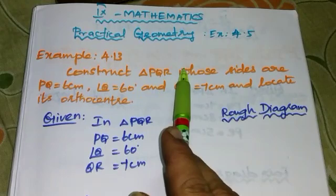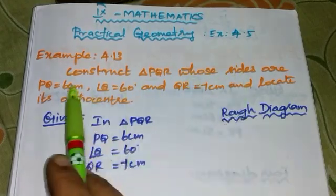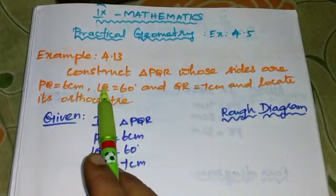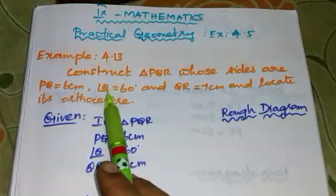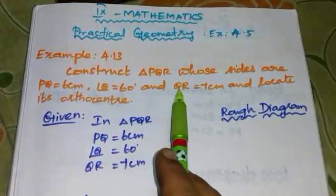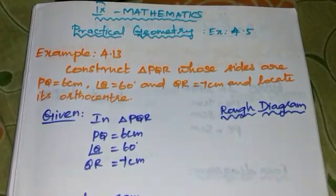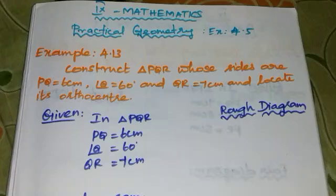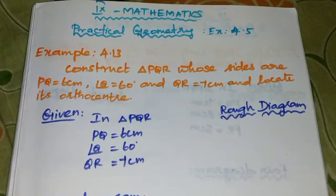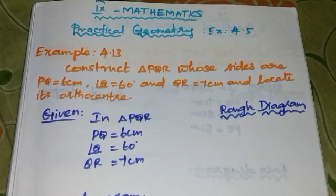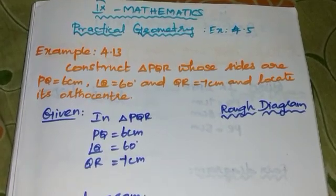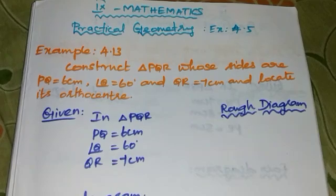Construct triangle PQR whose sides are PQ equal to 6cm, angle Q equal to 60 degrees, and QR equal to 7cm. And locate its orthocenter. The orthocenter is the point of concurrency of altitudes of a triangle.